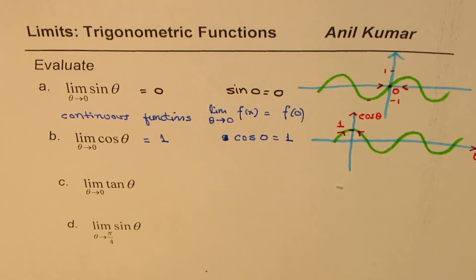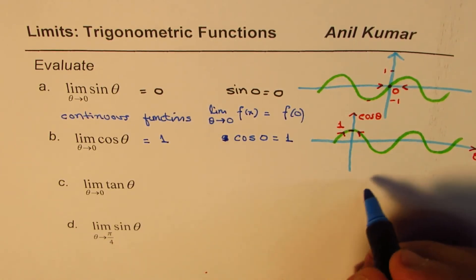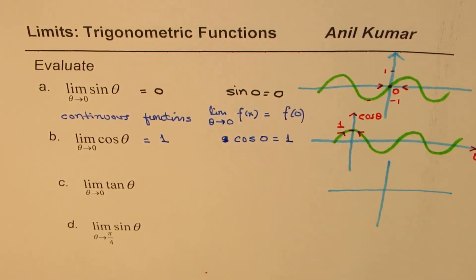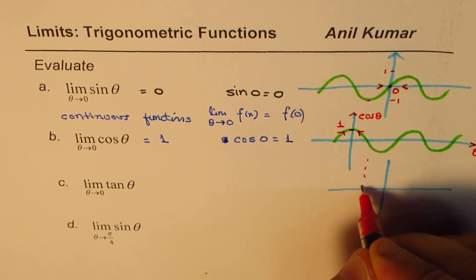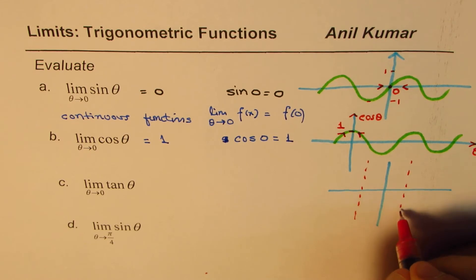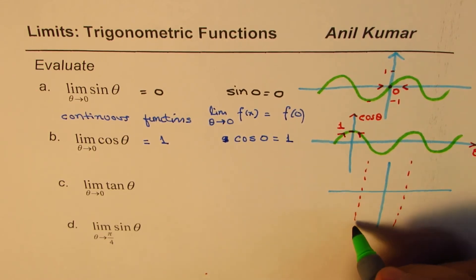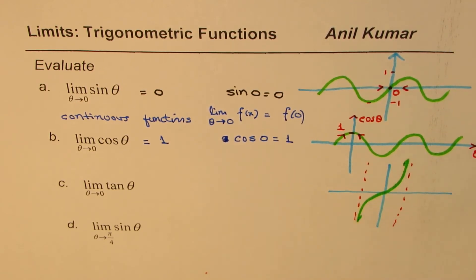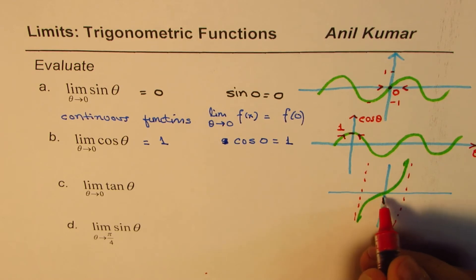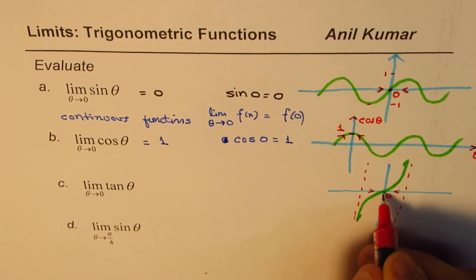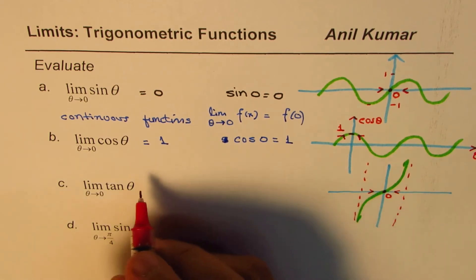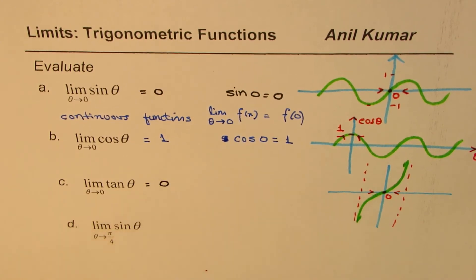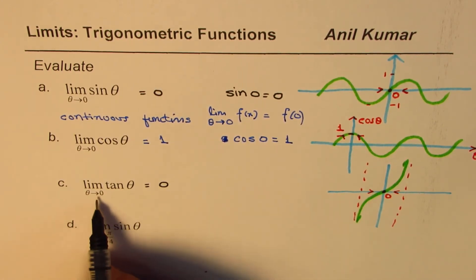Now let's look into the tan function. I'll sketch a portion of it close to 0. These are the asymptotes and the function goes through like this. As you approach 0 from the left side or from the right side, you approach a value of 0. So the limit of tan θ as θ approaches 0 is equal to 0.